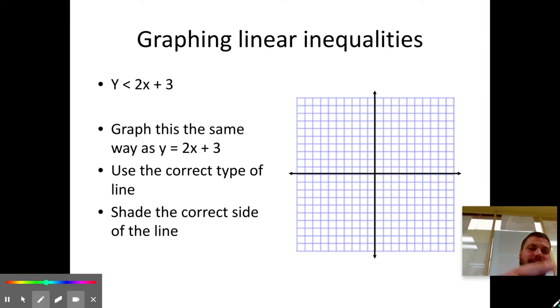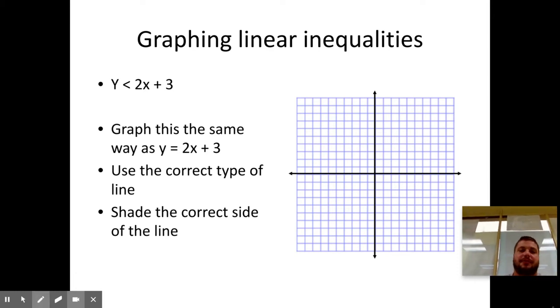But we do just have a couple rules that we need to remember. So it says graph this the same way as you graph y = 2x + 3, right? You start at the y-intercept of 3, the slope is 2, so you're positive 2 over 1, so it's up and to the right, up to right one.